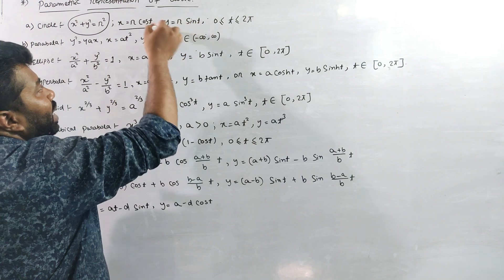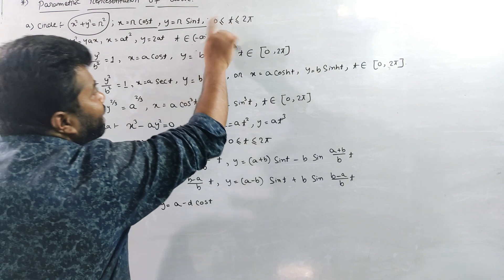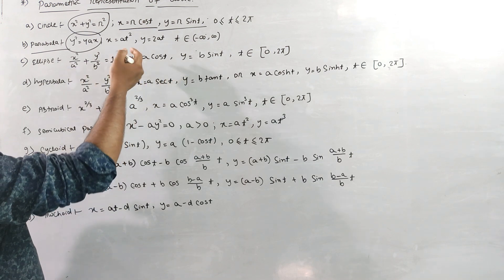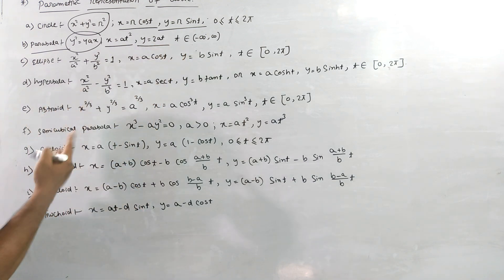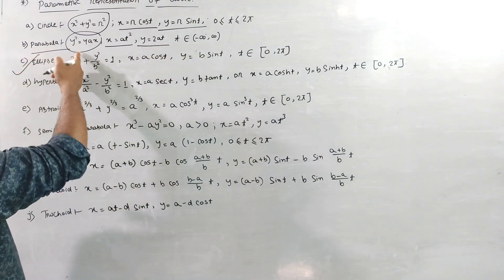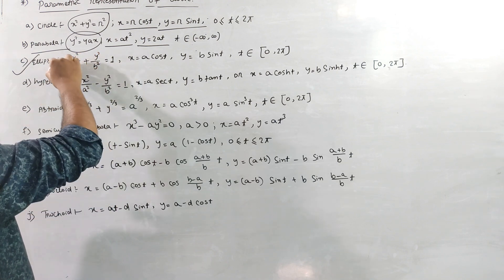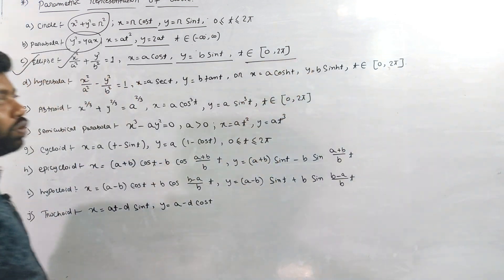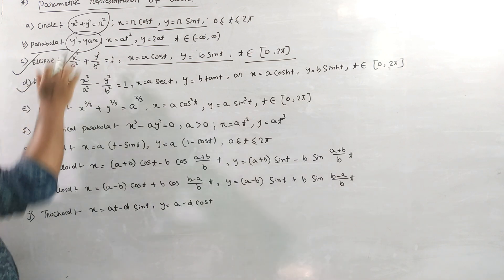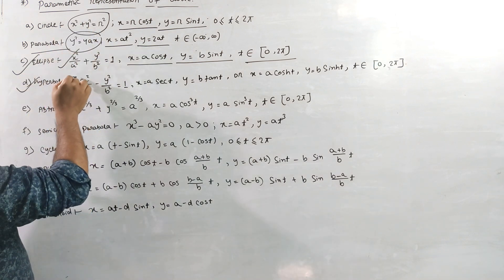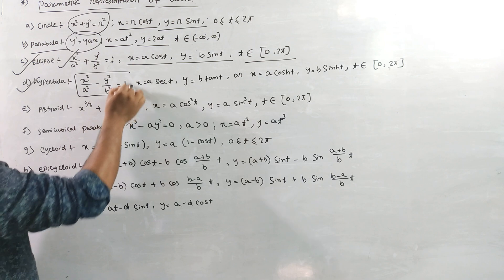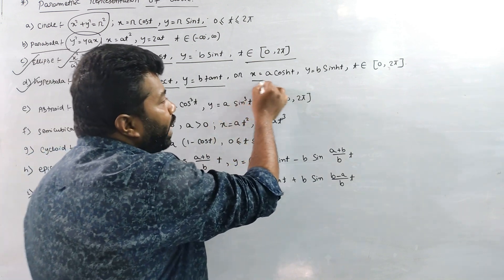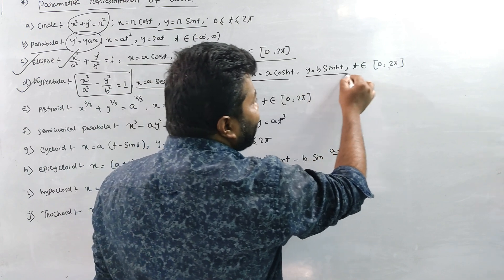For a parabola y squared = 4ax, the parametric form is x = at squared, y = 2at, with t from minus infinity to infinity. For an ellipse: x squared over a squared plus y squared over b squared equal to 1, the parametric form is x = a cos t, y = b sin t, with t from 0 to 2π. For a hyperbola: x squared over a squared minus y squared over b squared equal to 1, the parametric form is x = a sec t, y = b tan t, or equivalently x = a cosh t, y = b sinh t.